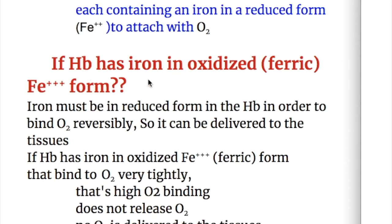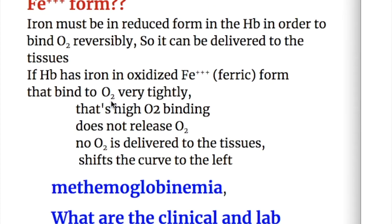What happens if hemoglobin has iron in oxidized or ferric form? Iron must be in a reduced form in the hemoglobin in order to bind oxygen reversibly, so it can be delivered to the tissues. If hemoglobin has iron in oxidized or ferric form, then it binds to oxygen very tightly and does not release oxygen — it is a high oxygen binding state. So no oxygen is delivered to the tissues; that shifts the curve to the left, and the condition is known as methemoglobinemia.